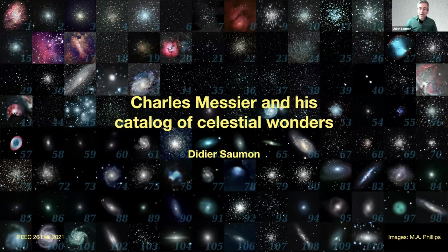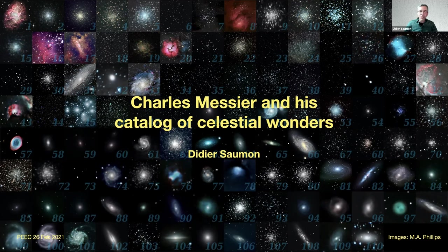Good evening, everyone. Last time I gave a PEEC presentation, it was about light pollution, a somewhat grim subject, and tonight I think it's going to be a lot more fun as we'll talk about Charles Messier and his catalog of celestial objects. Most people who are new to astronomy fairly quickly learn that beyond the planets and the moon, there are interesting objects called Messier objects. The talk tonight will be part history of astronomy, part biography. We'll talk about the catalog, what it contains, some of its unusual objects, and also a little bit at the end about how to go about observing those Messier objects.